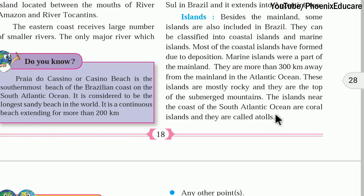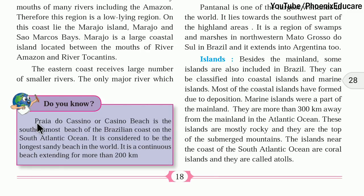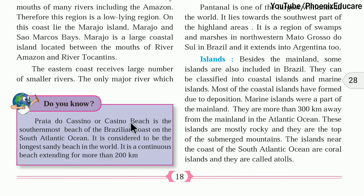In India, Andaman, Nicobar, and Lakshadweep islands are also coral islands or atolls. Praia do Cassino, or Casino Beach, is the southernmost beach of the Brazilian coast on the South Atlantic Ocean. It is considered to be the longest sandy beach in the world — a continuous beach extending more than 2200 kilometers.